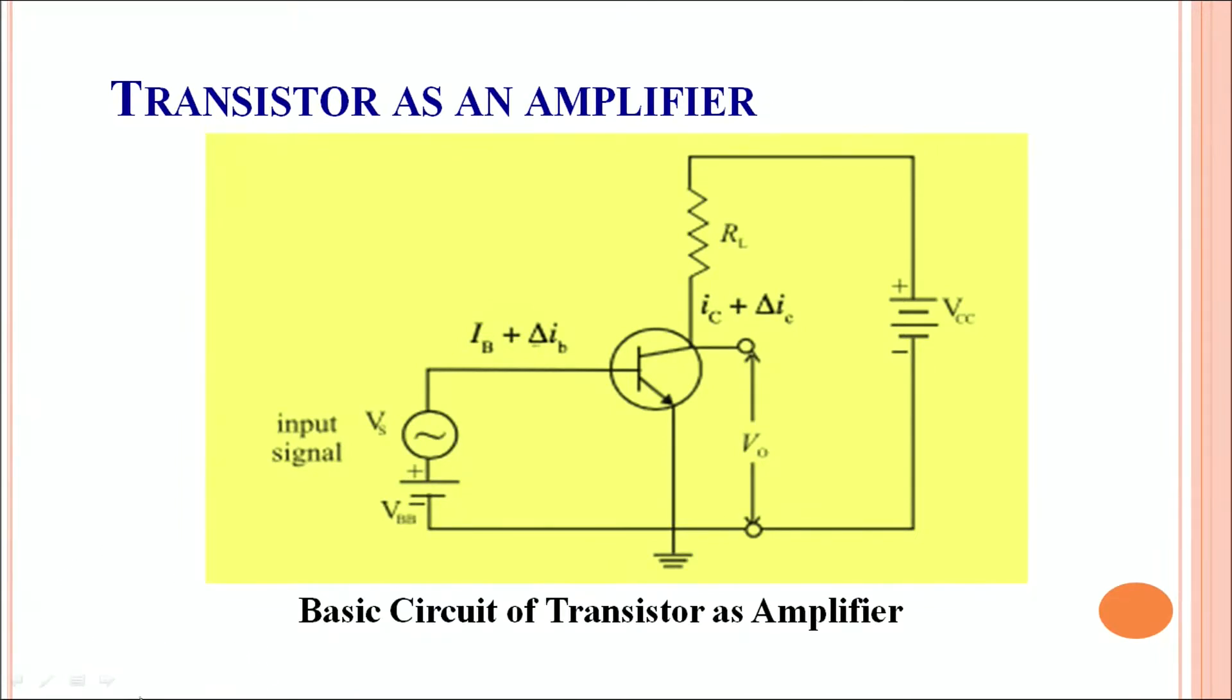over here the transistor is connected in a common emitter configuration which means that the emitter is common to the input as well as the output circuit.